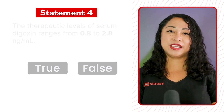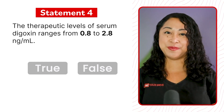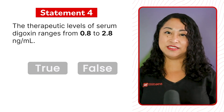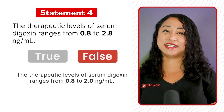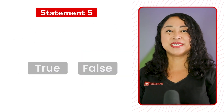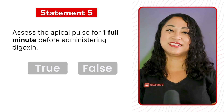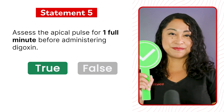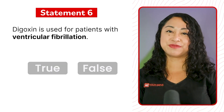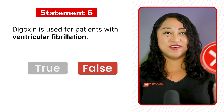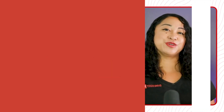Statement 4: The therapeutic levels of serum digoxin range from 0.8 to 2.8 ng/mL — false. The therapeutic level ranges from 0.8 to 2.0 ng/mL. Statement 5: Assess the apical pulse for one full minute before administering digoxin — true. Statement 6: Digoxin is used for patients with ventricular fibrillation — false. Do not give digoxin to patients with ventricular fibrillation, as it can affect the heart rhythm.